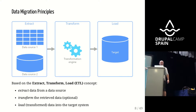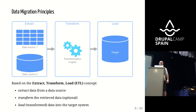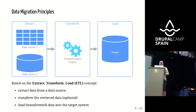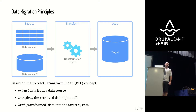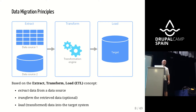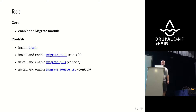These three steps are three crucial steps in the migration definitions we're going to write. Our three big steps in a migration definition follow extract, transform, load very closely. This is the main structure of a migration definition.